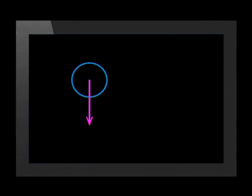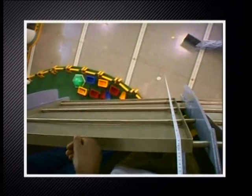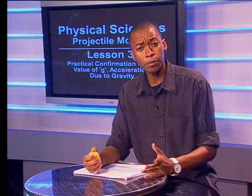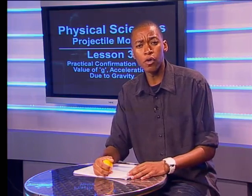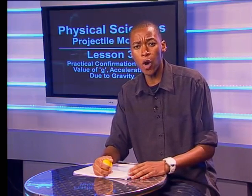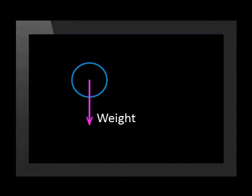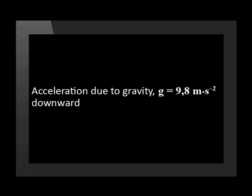Objects are pulled to the earth by a gravitational force called the object's weight. An object is in free fall when its weight is the only significant vertical force acting on it. An object in free fall might be moving upward or downward. For example, the ball is in free fall from the moment it leaves my hand until I catch it. For all this time, the ball's weight makes the ball accelerate downward at 9.8 meters per second squared. This is the acceleration due to gravity, also called g.